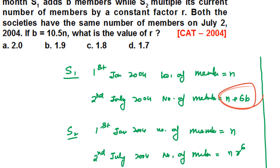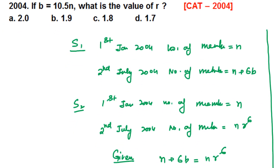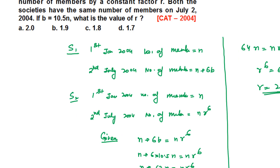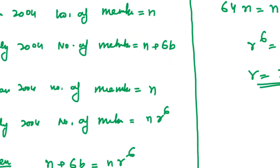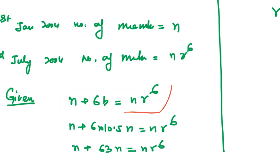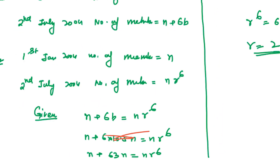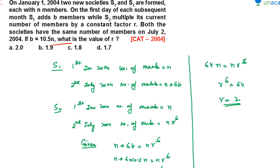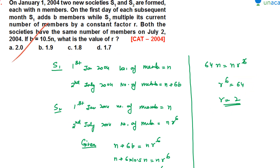Since both societies have equal members on July 2, 2004: n + 6b = n·r^6. Given b = 10.5n, substituting: 6b = 63n, so n + 63n = 64n = n·r^6. Cancelling n: r^6 = 64, therefore r = 2. The answer is option B: 2. The key insight is recognizing 6 months have elapsed, so S1 adds 6b and S2 is multiplied by r^6.